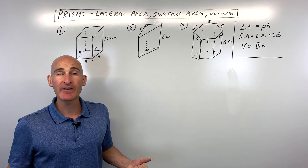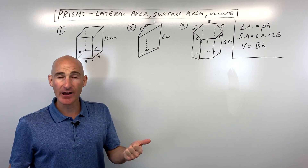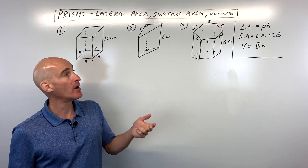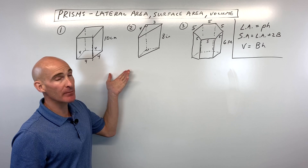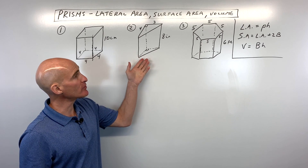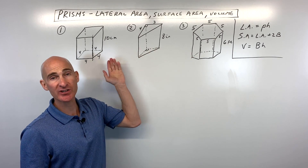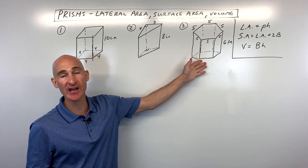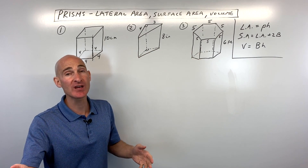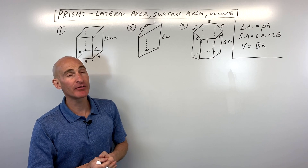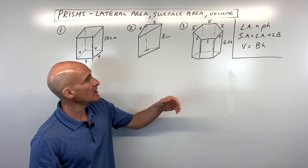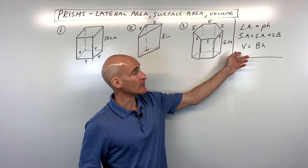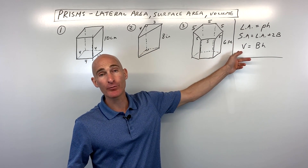In this lesson, you're going to learn how to find the lateral area, surface area, and volume of a prism. We're going to go through three examples, starting easy and getting progressively more challenging. But first, let's talk about the formulas for finding the lateral area, surface area, and volume of a prism.